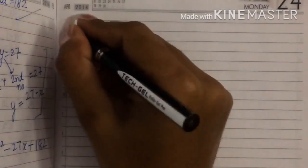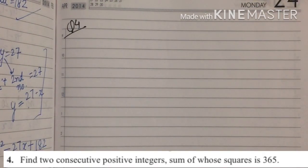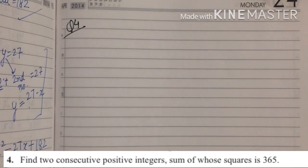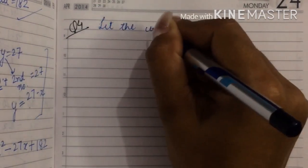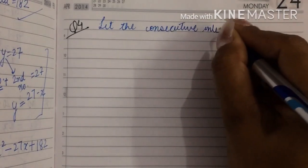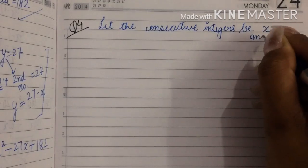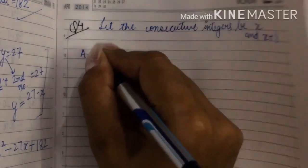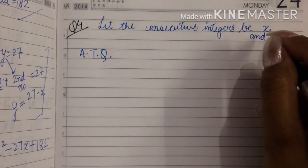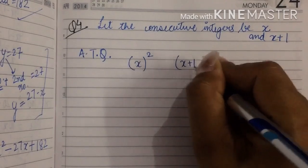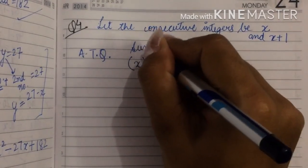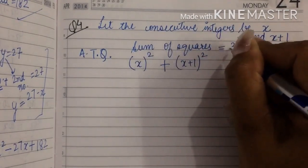Next question, question number 4: find two consecutive positive integers the sum of whose squares is 365. In the last exercise we learned how to assume consecutive integers. Let the consecutive integers be x and x plus 1. According to the question, the sum of their squares: square of the first number plus square of the second number, added together — the sum of squares — is given as 365.